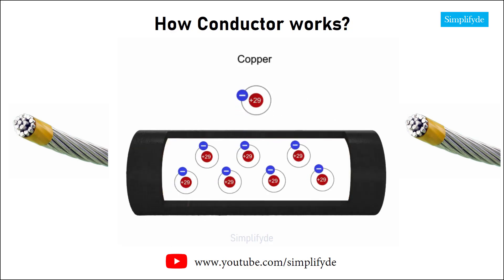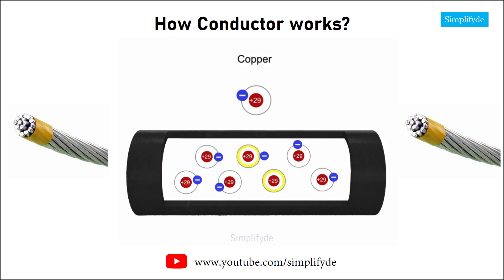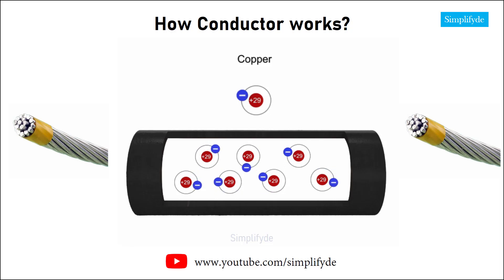In the absence of a voltage, the free electrons in a copper wire will drift in random directions from the orbit of one atom to another.